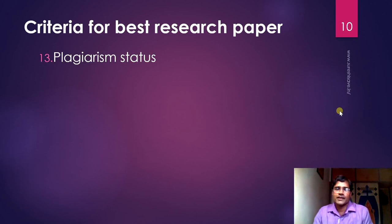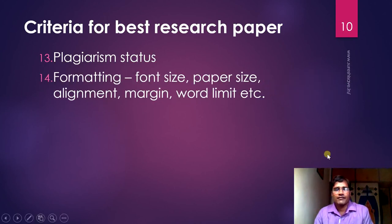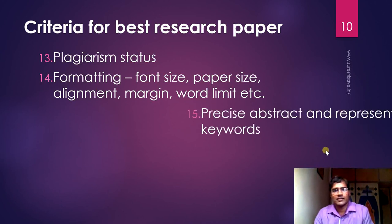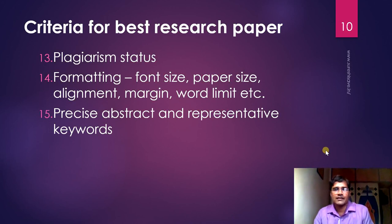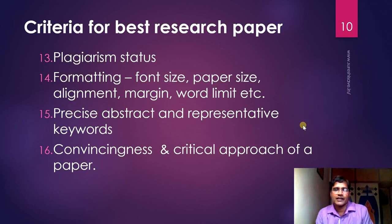If the plagiarism level is acceptable it will be considered a good research paper. Each conference or journal has criteria for how much plagiarism is acceptable, so go through it. The technical part — font size, paper size — is generally mentioned in the conference brochure or journal website, so refer to it and write accordingly. Write a precise abstract and give representative keywords, especially the variables you are focusing on. Your critical approach should be reflected in the research paper — use scientific language and be critical and rational.